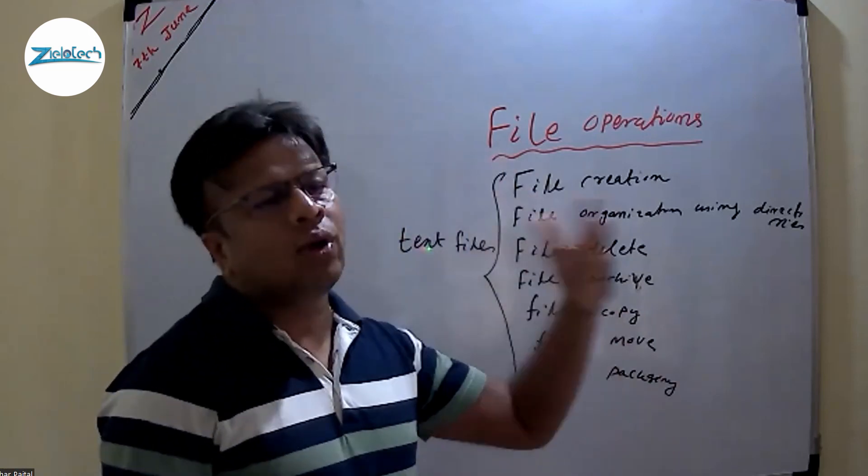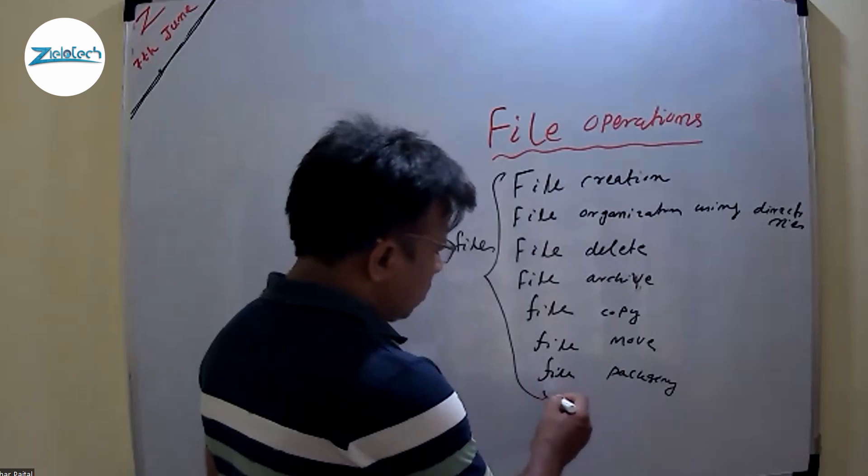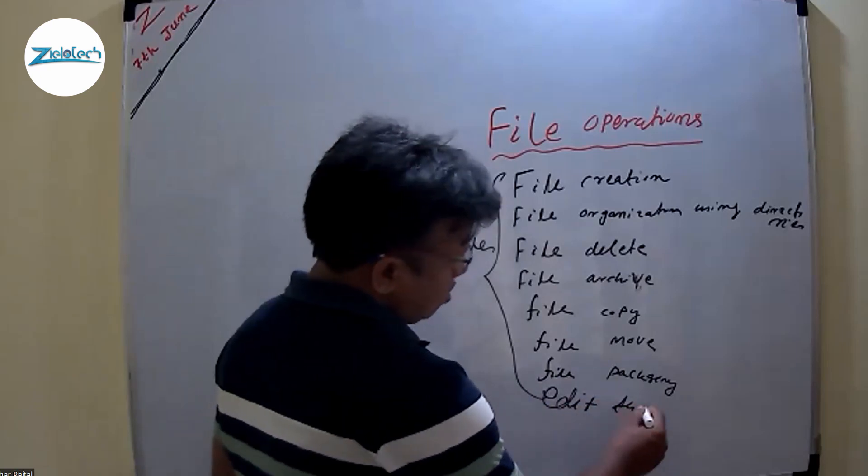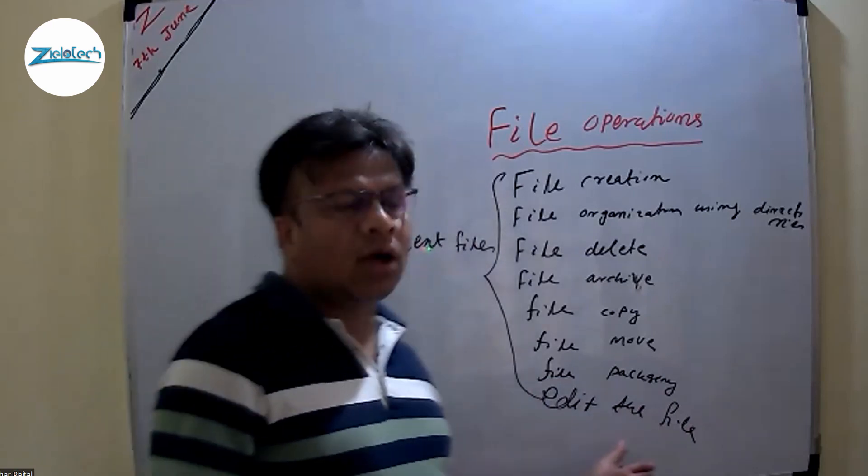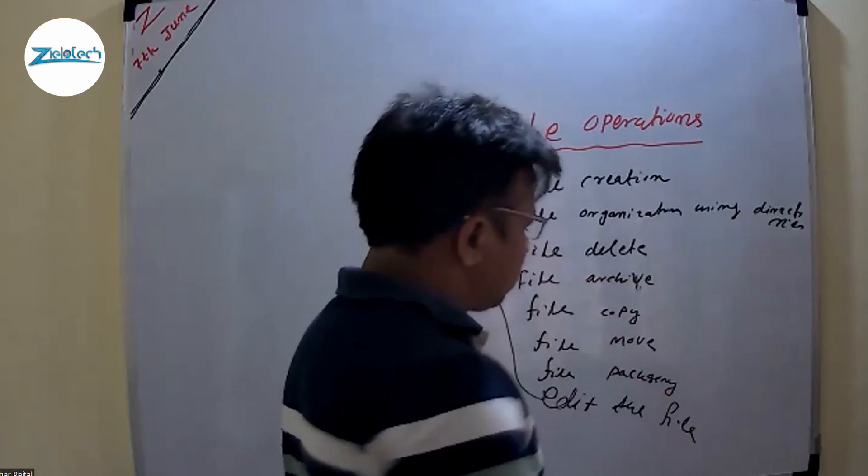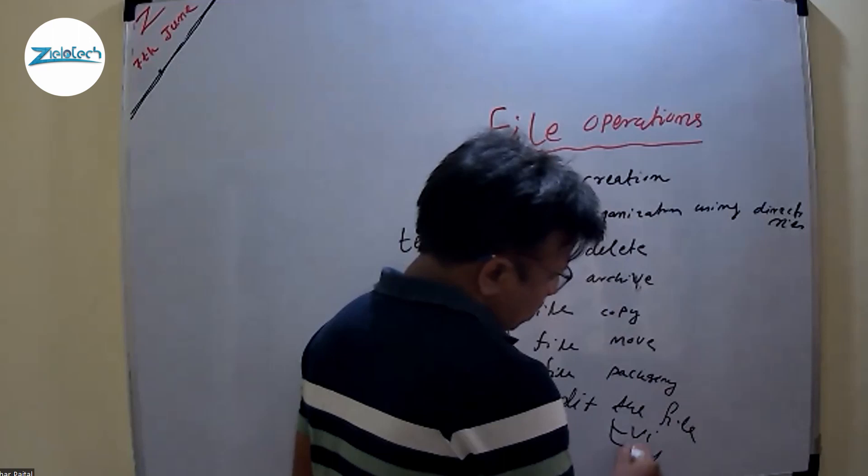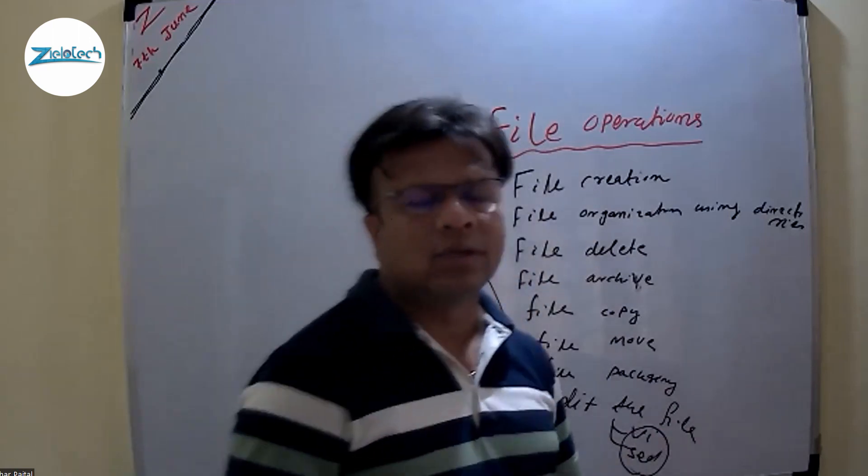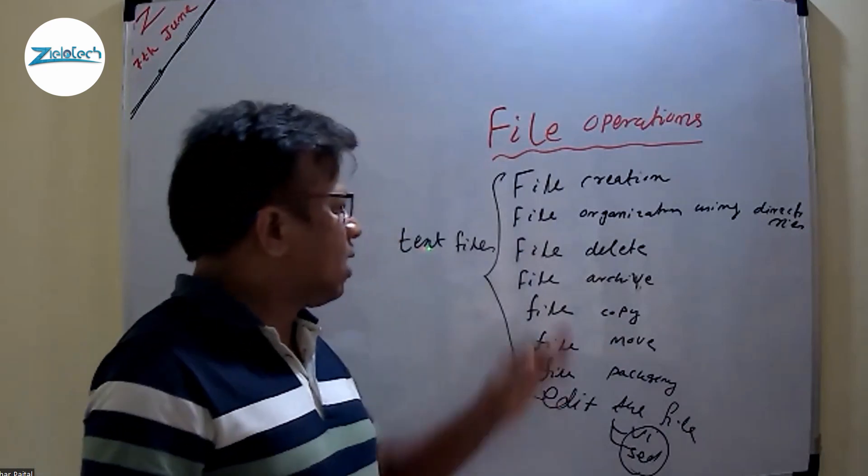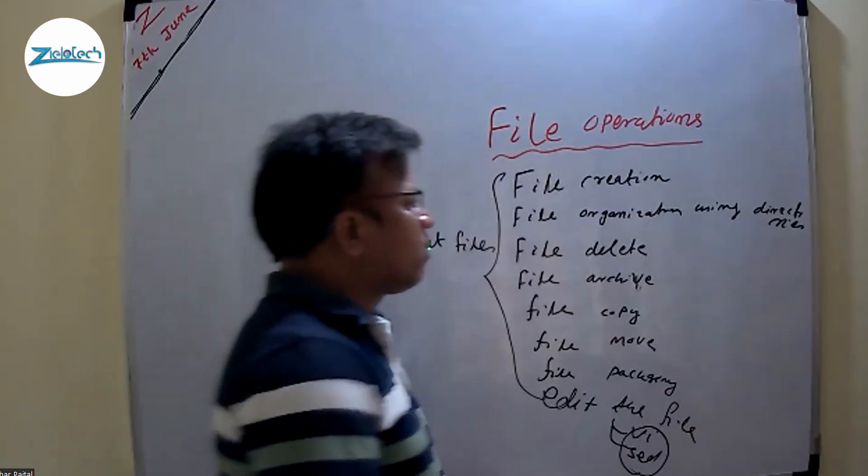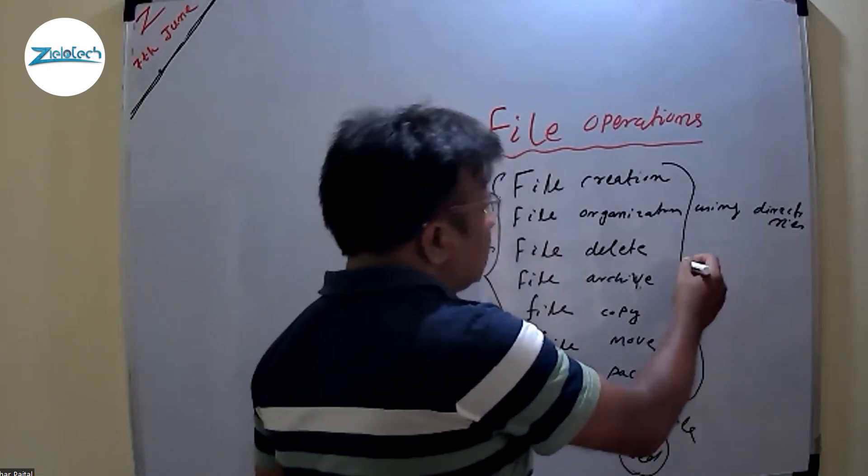Then once we create the file, finally we are going to edit the file also. If we have an existing file, then we can edit the file using - we have two commands. One is vi and ex. These are the very top level commands using which we are going to edit the data of a text file. And then other things are external commands. Each command, each particular operation will be often using the commands.